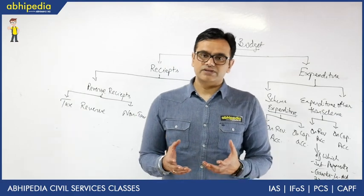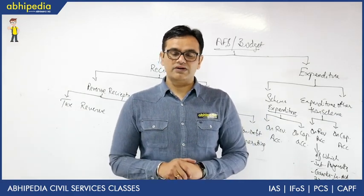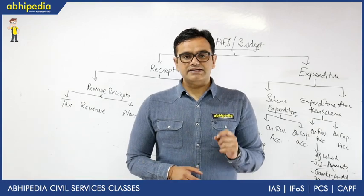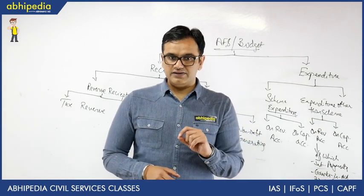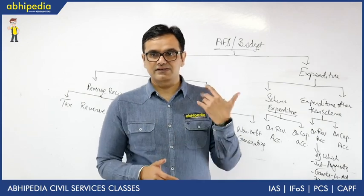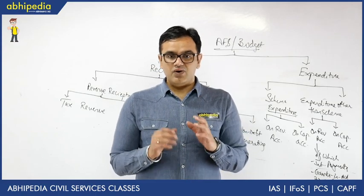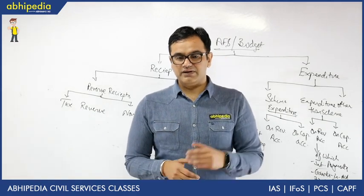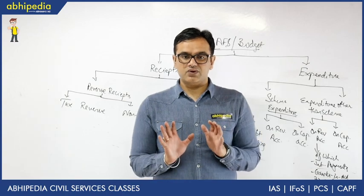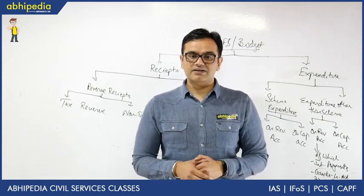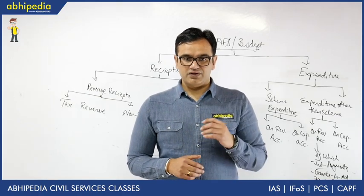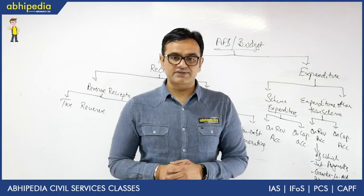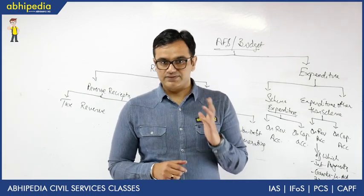Within the budgetary terminology, you have to understand what revenue and capital mean. Revenue essentially means any kind of money generated or spent on operational activities — we will have revenue receipts and revenue expenditure. For example, let's say you bought a hotel. On a daily basis you are running the hotel, so the money you receive by running it is called a revenue receipt — it's an operational activity. Similarly, salaries you pay to your staff, maintenance, electrical repairs — whatever expenditure you make on a recurrent basis is called revenue expenditure. It is operational and recurrent in nature.